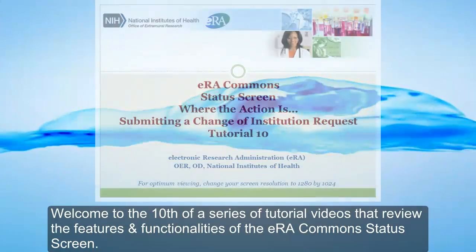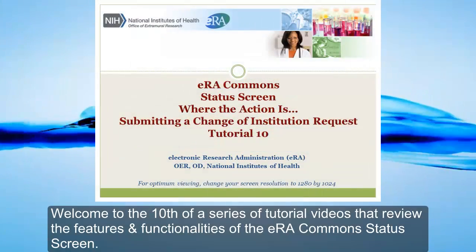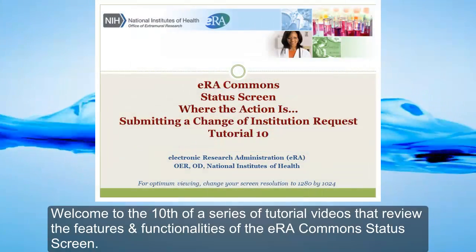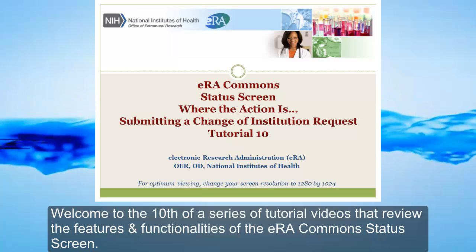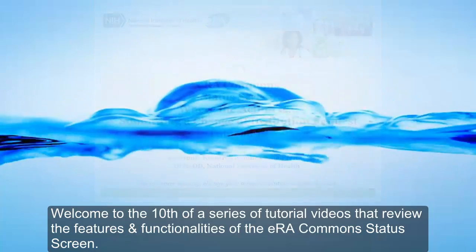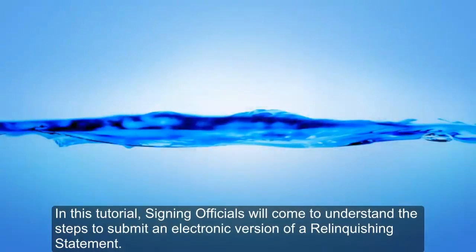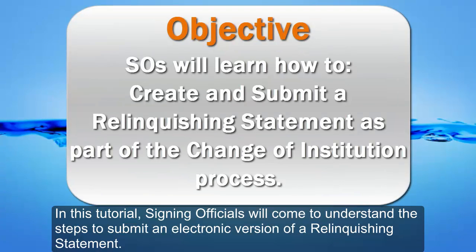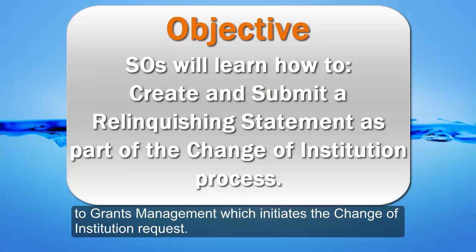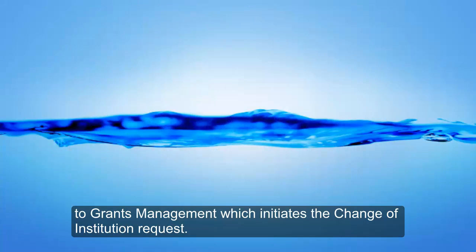Welcome to the tenth in a series of tutorial videos that review the features and functionalities of the ERA Commons Status screen. In this tutorial, signing officials will come to understand the steps to submit an electronic version of a relinquishing statement to Grants Management, which initiates the Change of Institution request.